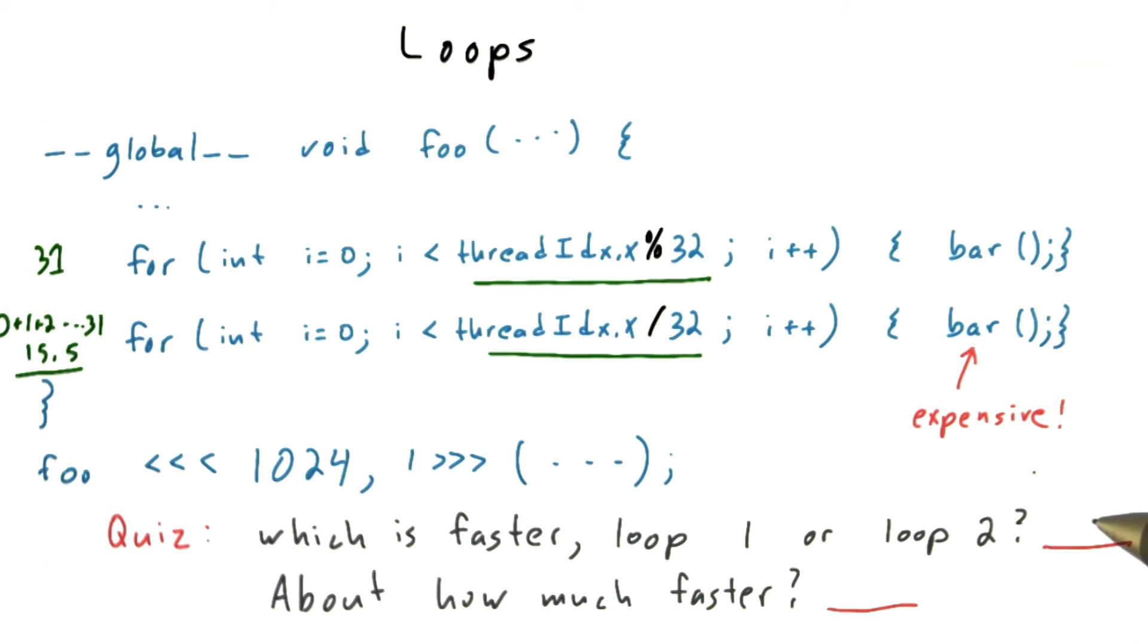So now we know what we need to know to answer the question. Clearly, the second loop will execute faster, and it'll be twice as fast because on average, the number of times that the expensive bar function gets evaluated is half the number of times that bar function gets evaluated during the first loop.